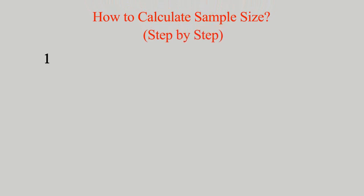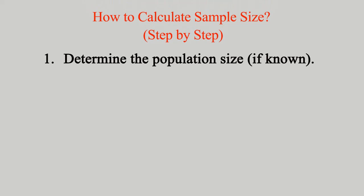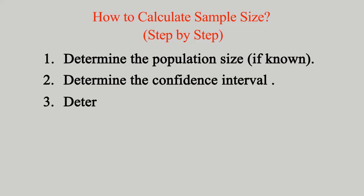Let's begin. Step 1: Determine the population size if known, which is the total number of entities in your population. Remember, in case the population size is very large but the exact number is not known, then use 100,000 because the sample size doesn't change much for populations larger than that.